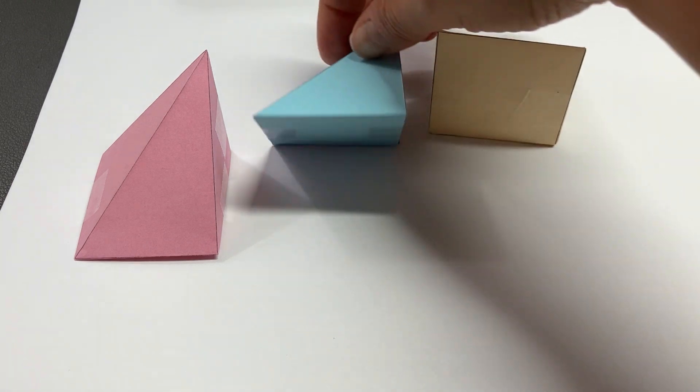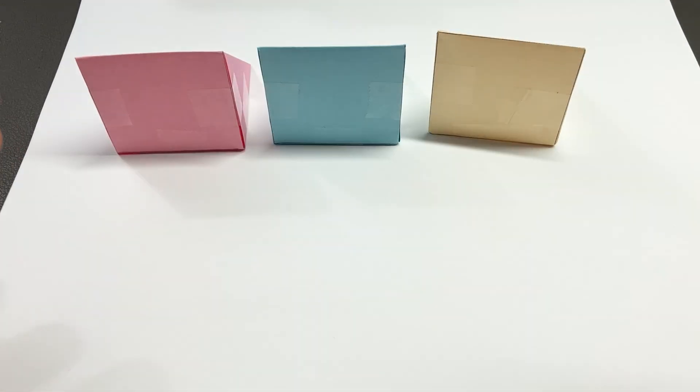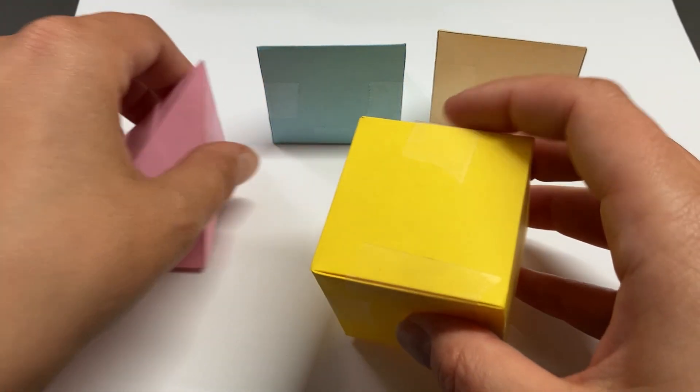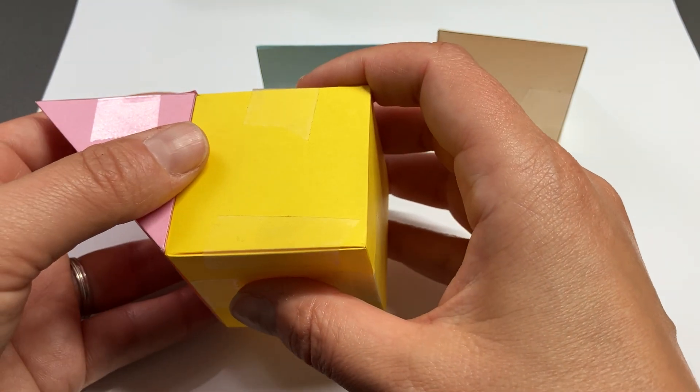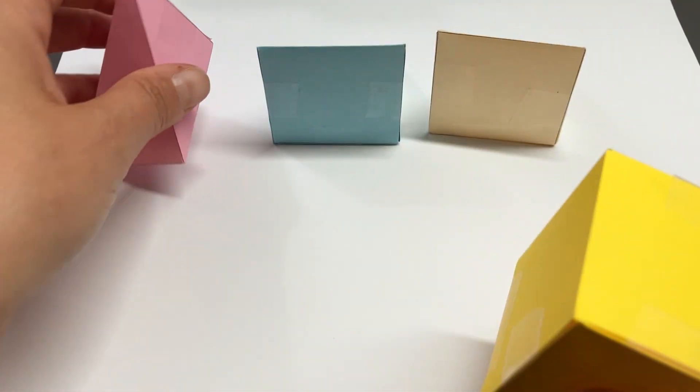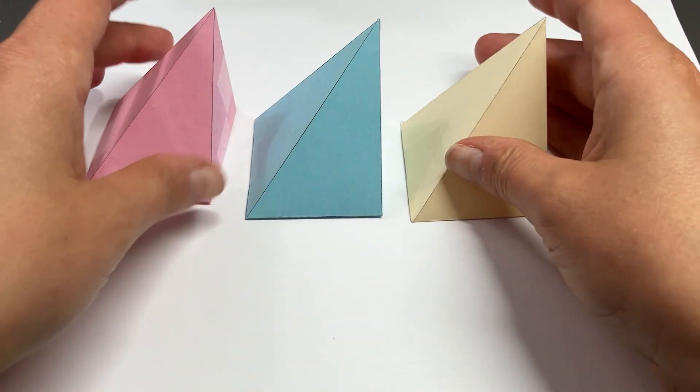The base of each rectangular pyramid is a square. The square is the same size as one face of our cube, and they all have the same height.